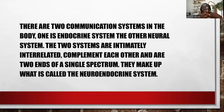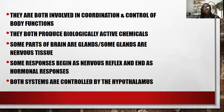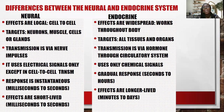These two systems are intimately interrelated — they complement each other, like two ends of a spectrum, and together they make up what is called the neuroendocrine system. Looking at their similarities: both are involved in coordination and control of bodily functions, both produce biologically active chemicals, some parts of the brain are actually glands, some glands are nervous tissue, some responses begin as nervous reflexes and end up as hormonal responses, and both systems are controlled by the hypothalamus.